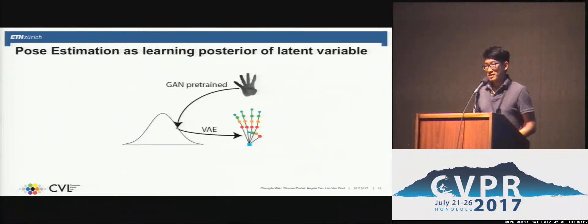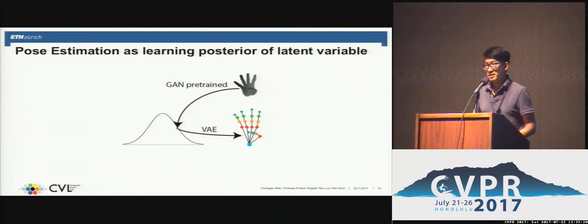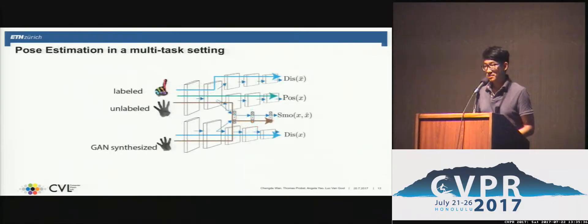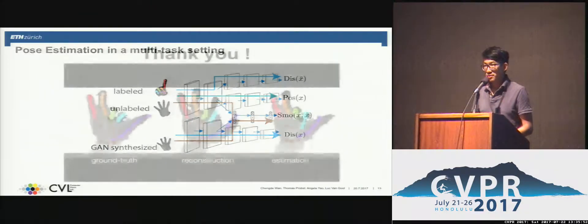In this way, we learn a shared latent space where each sample can either map to a synthesis depth map or to a pose parameter. Pose estimation is then formulated as learning the posterior of the shared latent variable given the depth map. The posterior estimation network is pre-trained by the discriminator of the GAN to make full use of unlabeled samples. We also incorporate synthesis depth maps from the GAN and formulate posterior estimation in a multi-task setup to regularize the estimation.